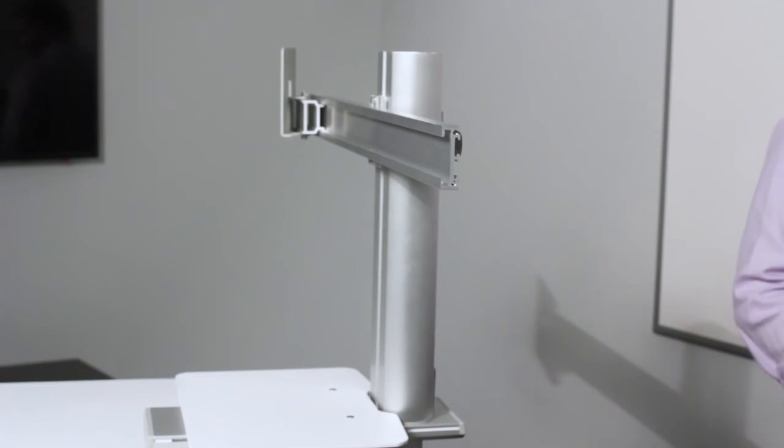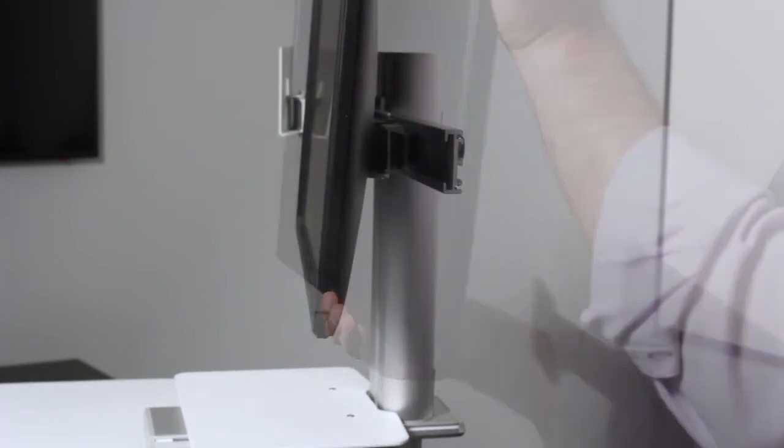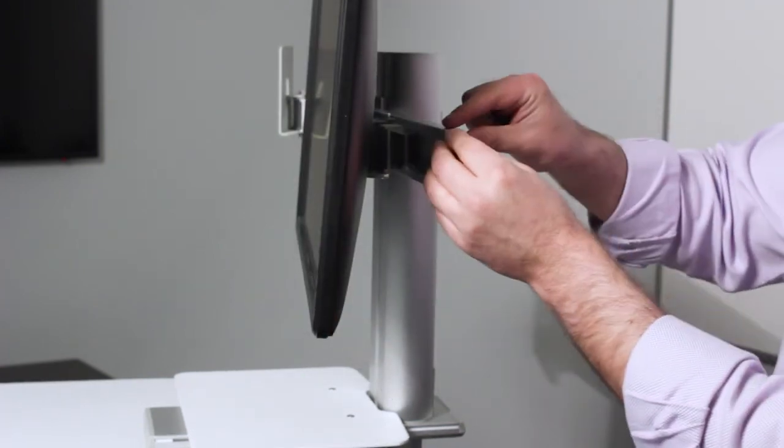Step 12. Slide the mounted monitors back into the crossbar channel and reattach the end cap. Monitors can be adjusted horizontally after the end cap is attached.